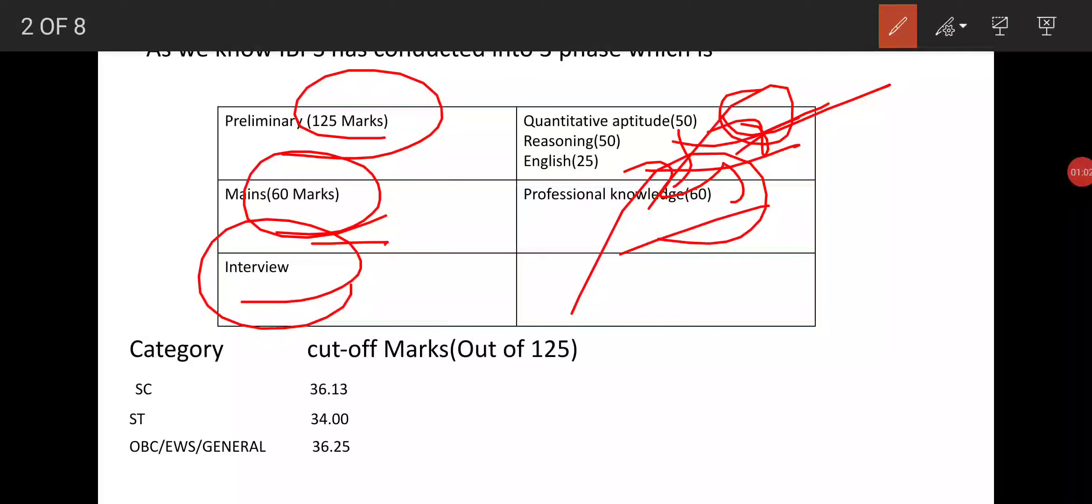Let's discuss the cutoff marks according to categories. Scheduled Caste (SC) is 36.13 out of 125 marks, Scheduled Tribe (ST) is 34 out of 125 marks, Other Backward Class or Economically Weaker Section or General category is 36.25 out of 125 marks.